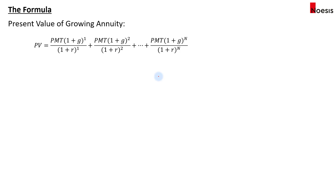In the case of a growing annuity, we have the PMT, which is the annuity amount in real terms. The annuity grows at a certain growth rate G every year, and there is a discount rate R. We need to calculate the present value of all this annuity that grows at a constant rate G for N number of years.